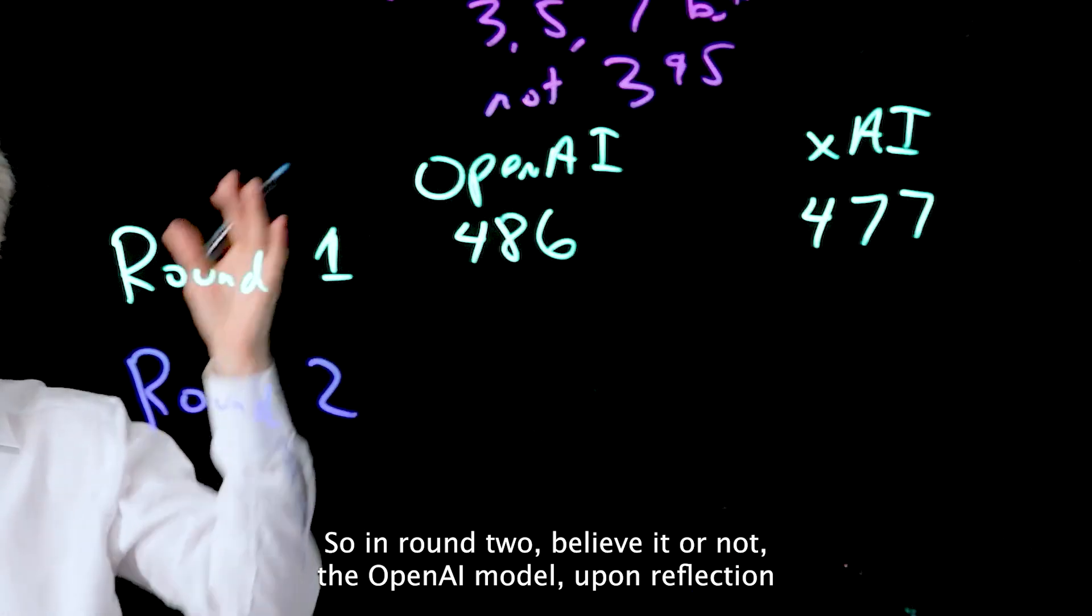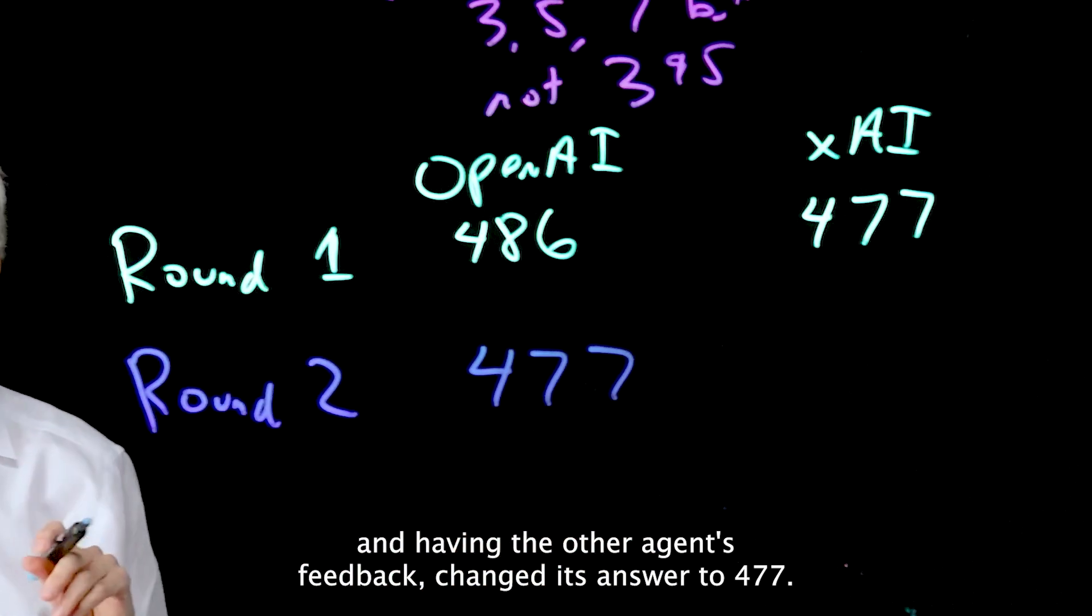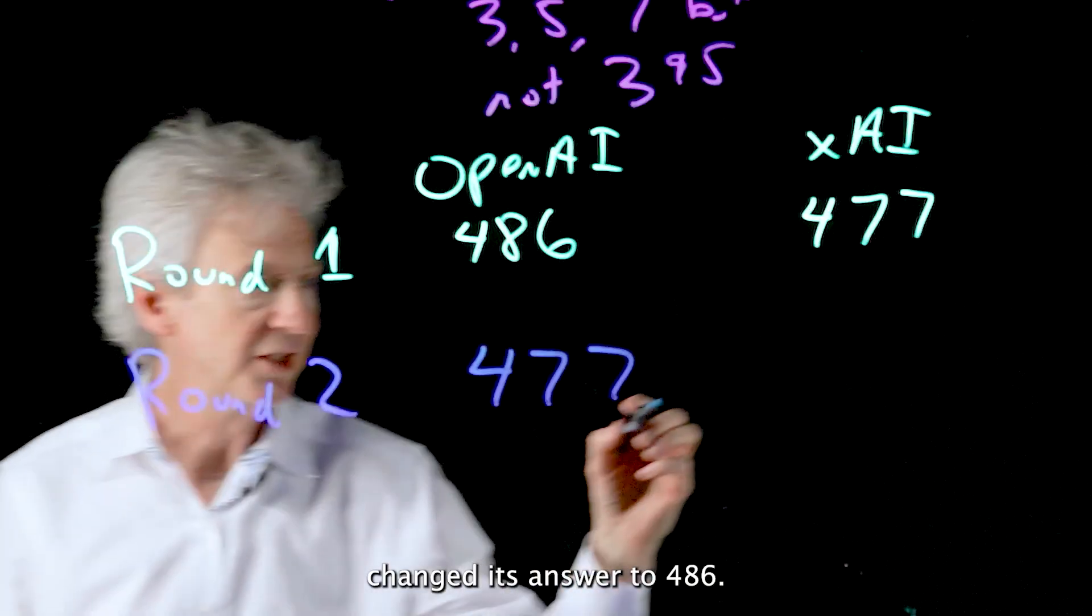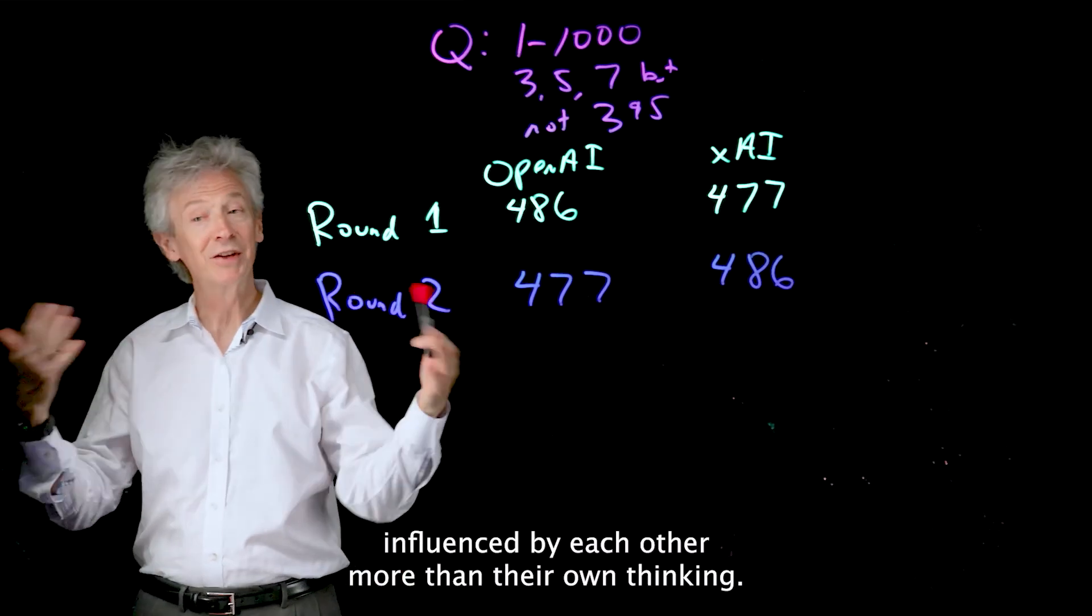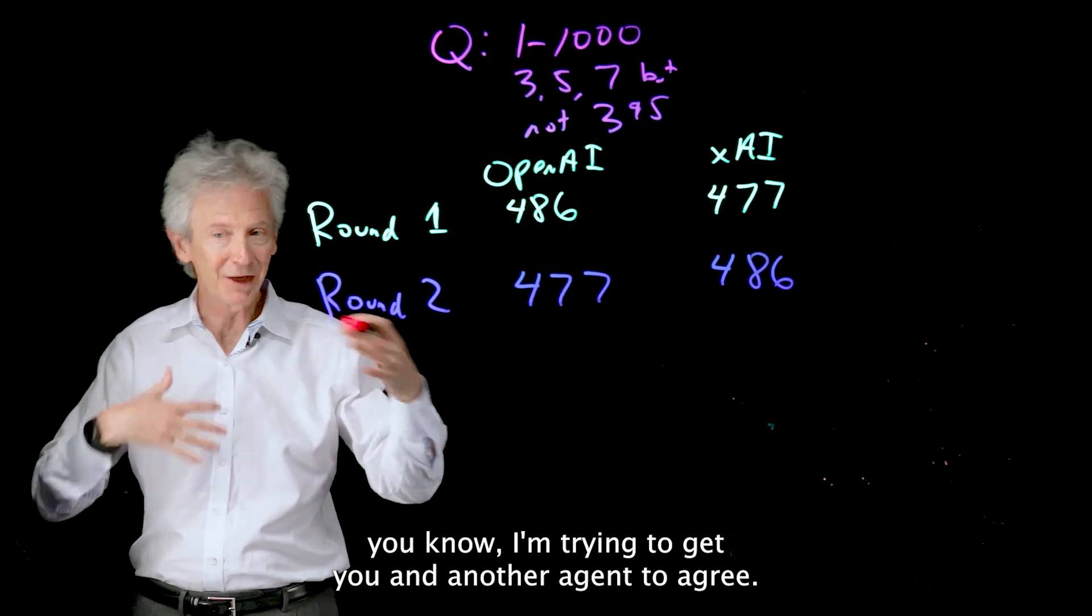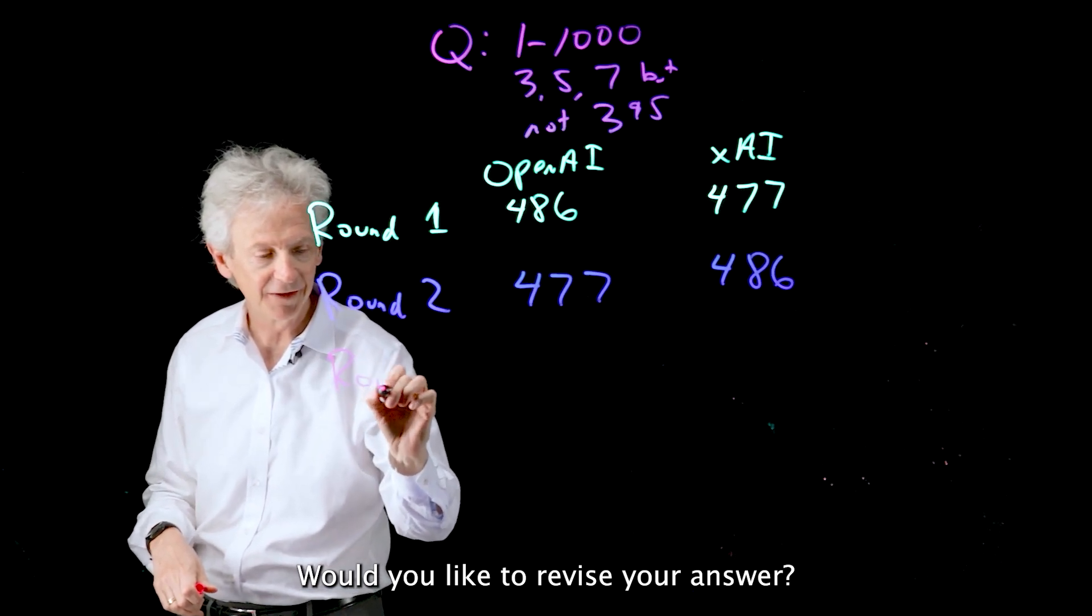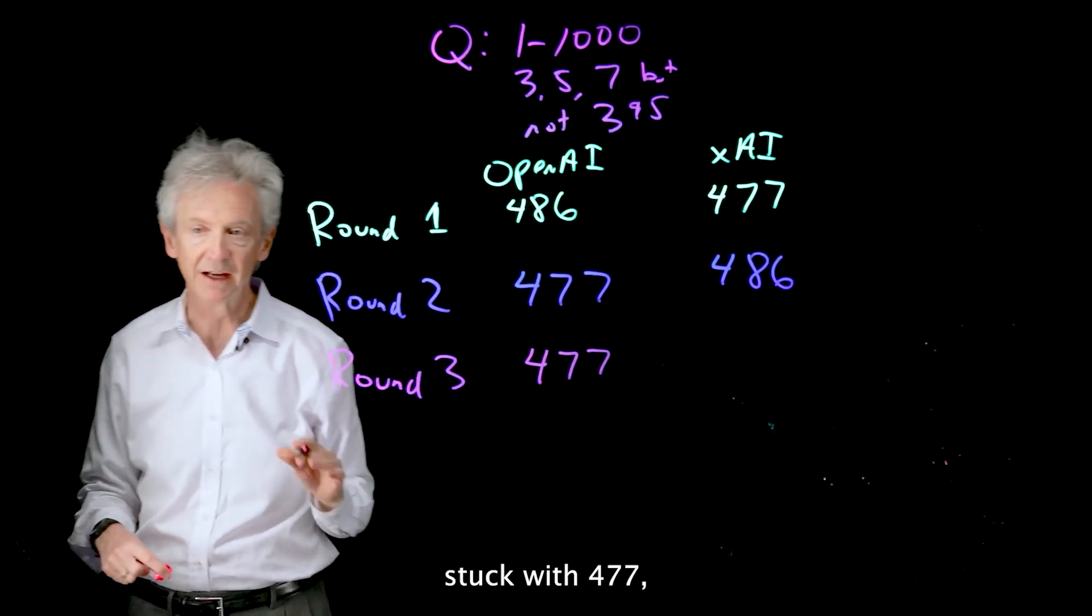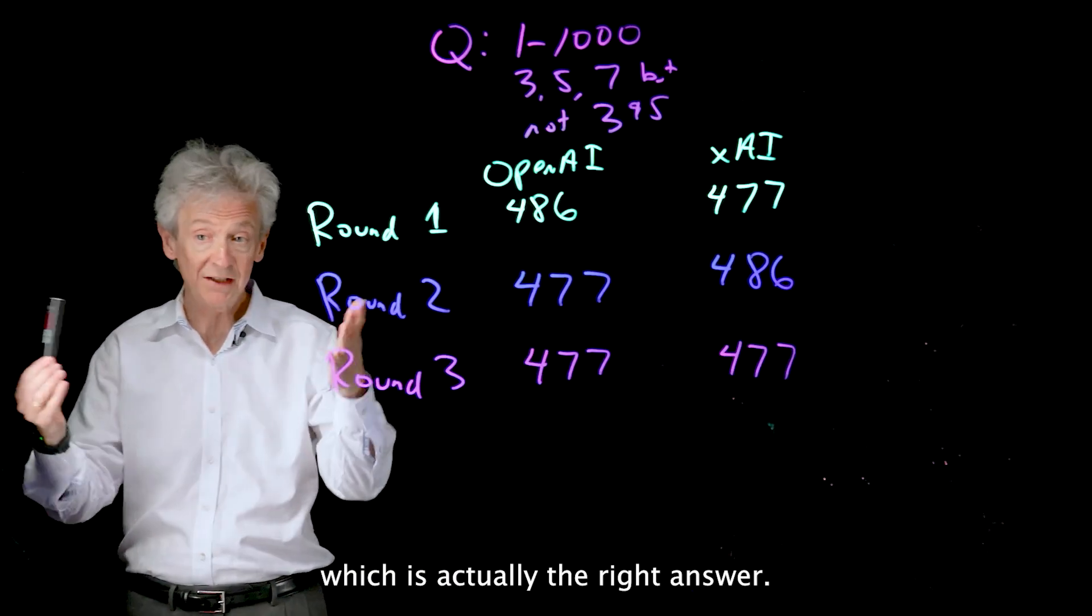So in round two, believe it or not, the OpenAI model upon reflection and having the other agent's feedback changed its answer to 477. And the XAI model upon reflection and getting feedback from the other model changed its answer to 486. So they were both influenced by each other more than their own thinking. So I asked again. I basically said in the prompts, I'm trying to get you and another agent to agree. Here's the logic of the other agent. Would you like to revise your answer? So in round three, the OpenAI model stuck with 477. And the XAI model changed its answer to 477, which is actually the right answer.